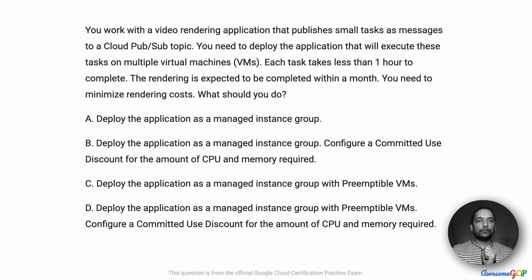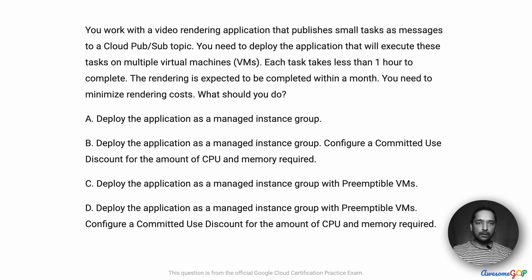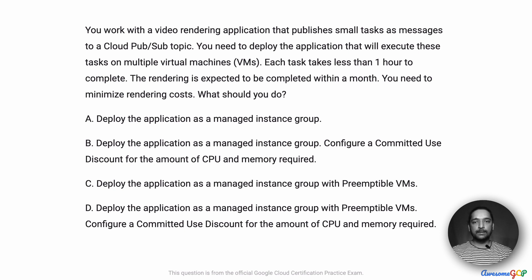In this project scenario, you work with a video rendering application that publishes small tasks as messages for a Cloud Pub/Sub topic. You need to deploy the application that will execute these tasks on multiple virtual machines. Each task takes less than one hour to complete. The rendering is expected to be completed within a month. You need to minimize rendering costs. What should you do?